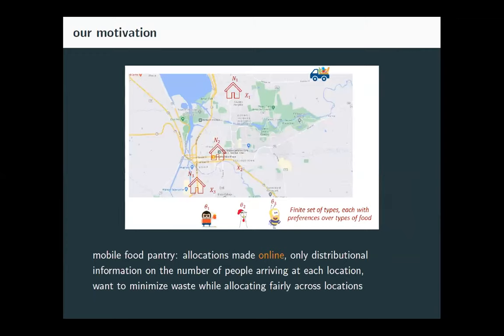The mobile food pantry works as follows: there's a truck with food at the beginning of the day. It's announced in advance — say at 10 a.m., it goes to the Cortland Community Center, sets up, and distributes food, deciding an allocation to every individual that shows up. Then it closes shop, drives to another location, distributes food there, and returns back to the food bank.